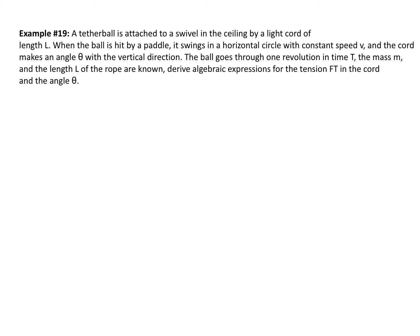This deals with circular motion. First, obviously, we read the question. What's given to us? We're given the period — the ball goes through one revolution in time T. We've got the mass, which is m, and then the length of the rope. It's asking me to find tension and the angle based on those three things only. It does say there is a constant speed, but we don't have it, so we can't have that speed as part of our answer. We've got a tether ball hanging down, swinging around in a circle, with an angle of theta.